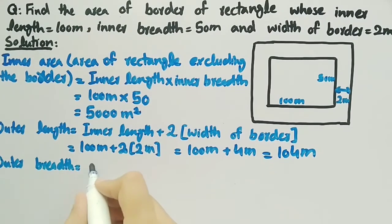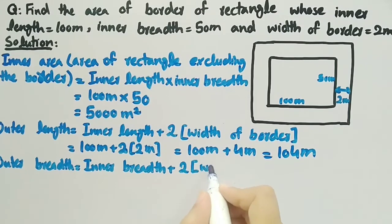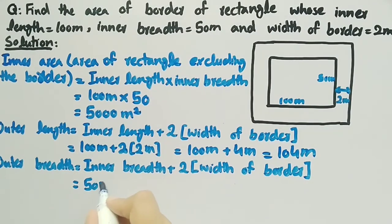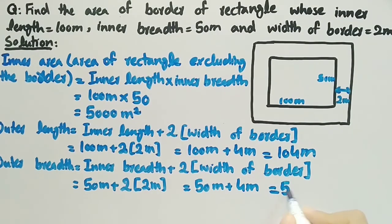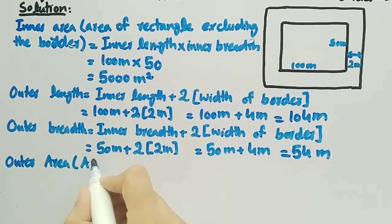Outer breadth is equal to inner breadth plus two times the width of border, so outer breadth is equal to 50 plus 4, which equals 54 meter. Now that we have found the outer length and outer breadth of the rectangle, we will find the outer area, that is, the area of the rectangle including the border.